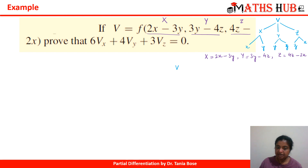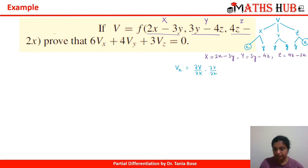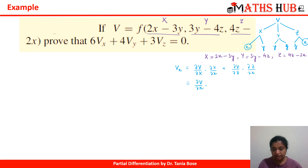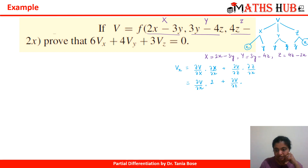The first step is to calculate vₓ. Mark where small x appears in the tree. vₓ = (∂v/∂X)(∂X/∂x) + (∂v/∂Z)(∂Z/∂x). We cannot simplify ∂v/∂X further, so keep it as is. ∂X/∂x = 2, and ∂Z/∂x = -2 (since Z = 4z - 2x). So vₓ = 2(∂v/∂X) - 2(∂v/∂Z).